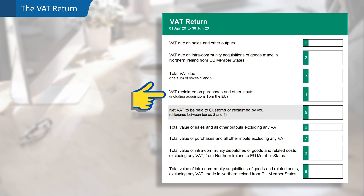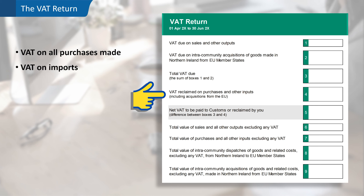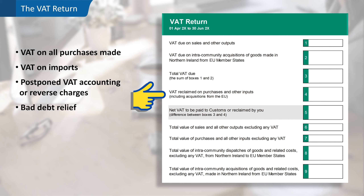Box four reports the VAT reclaimed in the period on purchases and other inputs, including acquisitions from the EU. This includes the input VAT on all goods and services purchased in the period, as well as VAT paid on expenses and capital items used within the business. As well as UK purchases, this is also where you can reclaim the VAT on imports, including any VAT reclaimed through postponed VAT accounting or paid under the reverse charge procedure. Also included here is any VAT relating to bad debt relief. We must also remember to deduct the VAT on any credit notes received from suppliers.